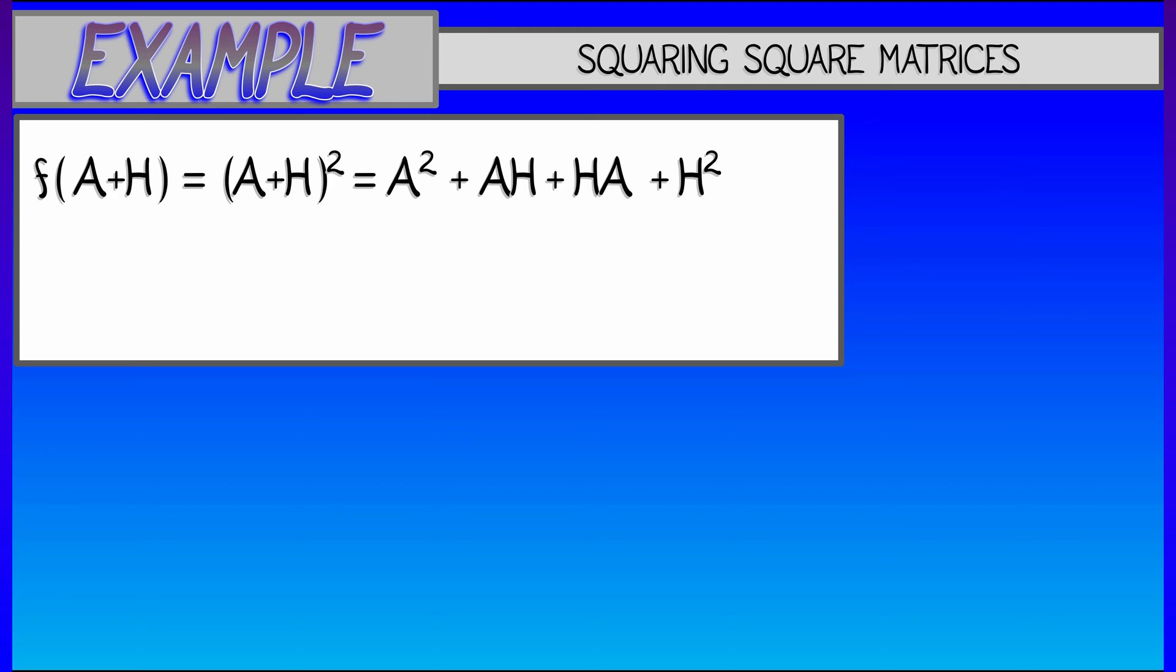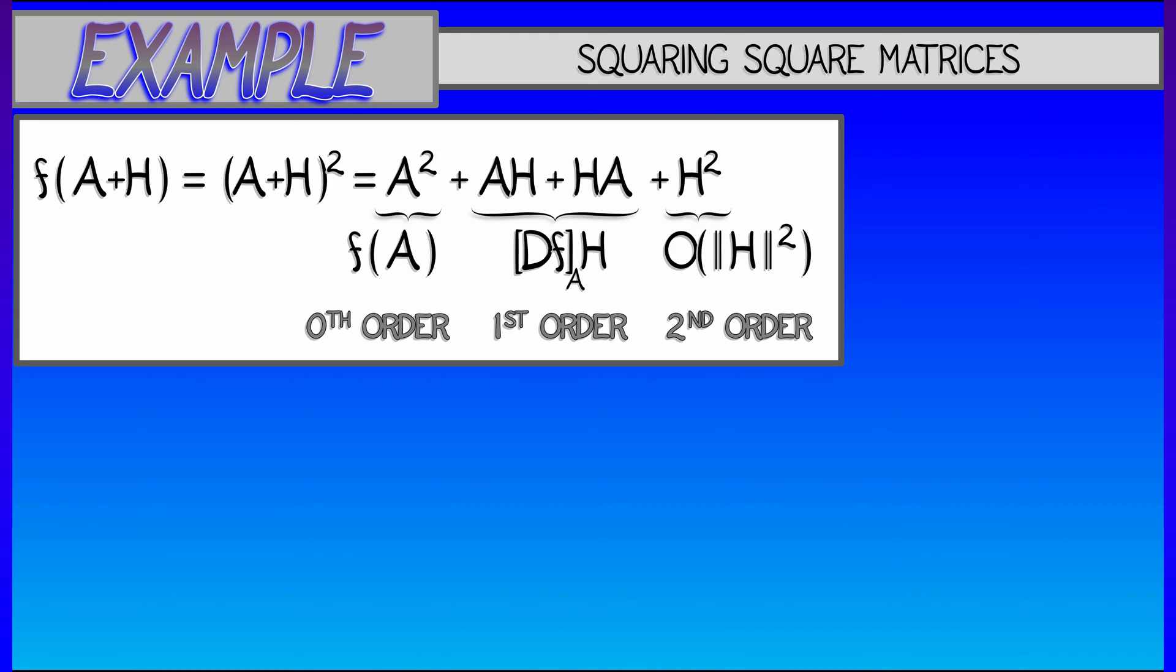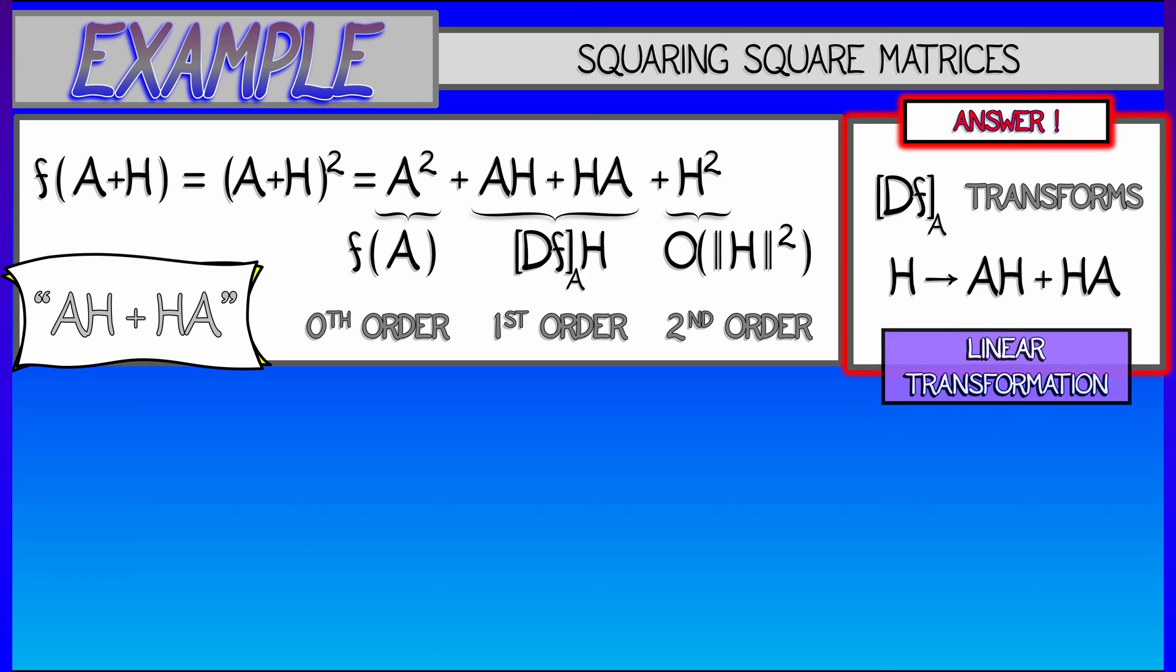Now, investigate this expansion, if you will. There is a zeroth order term in H, something that has no Hs at all. It's f(A). It's A squared. There's a first order term in H. This is A times H plus H times A. That's the derivative of f at A times H. And then the leftover stuff is quadratic in H clearly. And now we say, aha, because we see what the derivative is directly. The derivative of f at A transforms H to A times H plus H times A. That's a linear transformation in H.